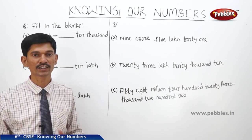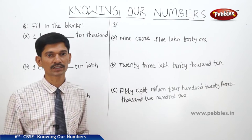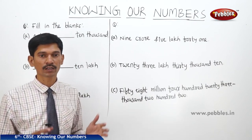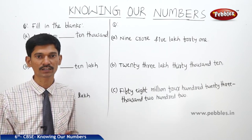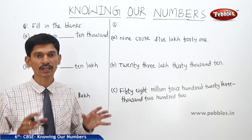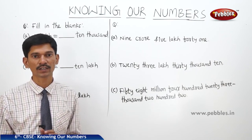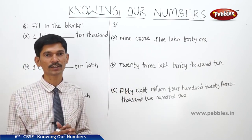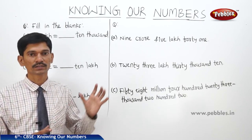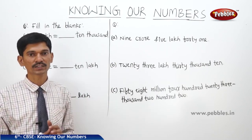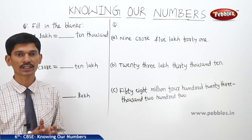So far we have learnt the larger numbers such as 10,000, 1 lakh, 10 lakh, and 1 crore. We have also learnt how to arrange given numbers in ascending or descending order, how to pick the greatest and smallest number, the place value chart, the Indian system of numeration, and the international system of numeration to read and write numbers.